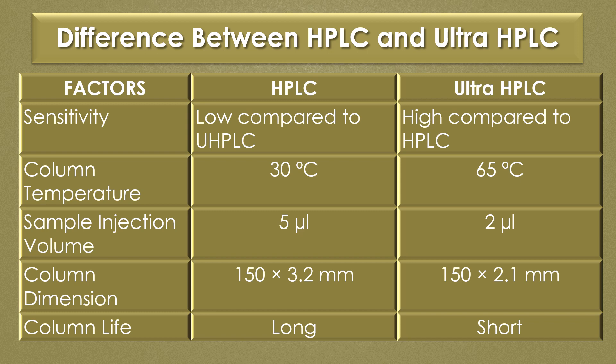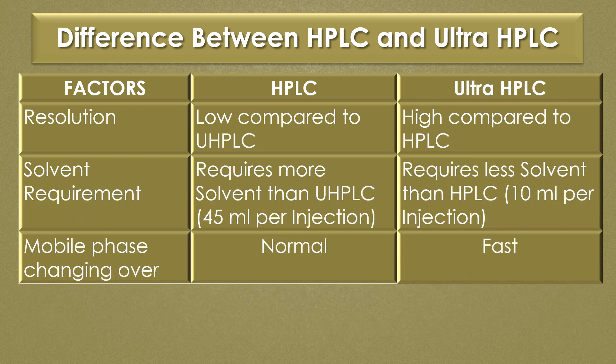The column life of HPLC is long, but the column life of Ultra HPLC is short. The resolution of HPLC is low when compared to Ultra HPLC, and the resolution of Ultra HPLC is high when compared to HPLC.